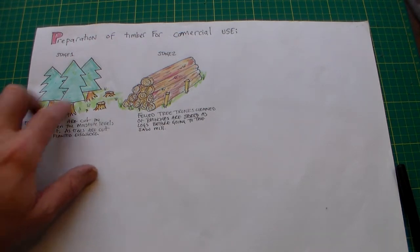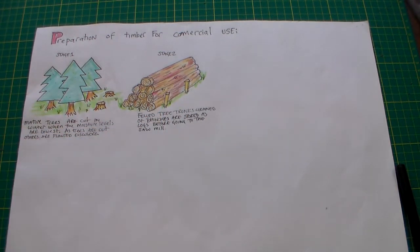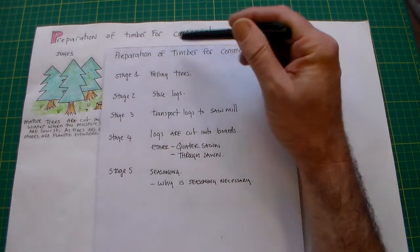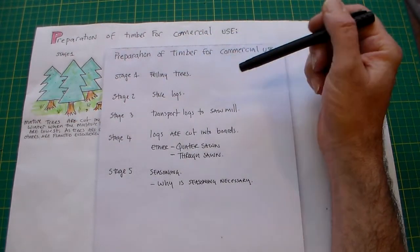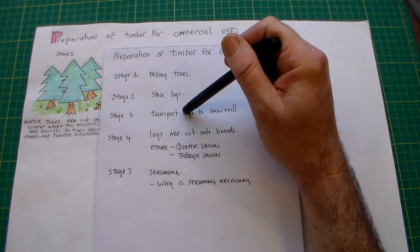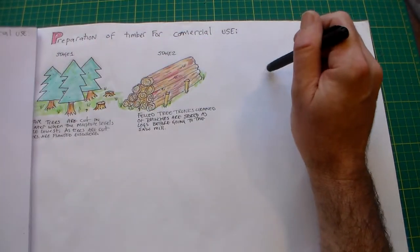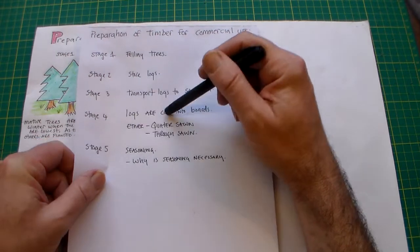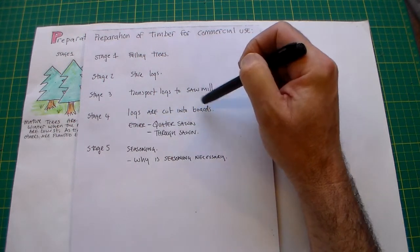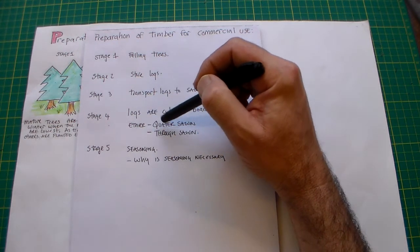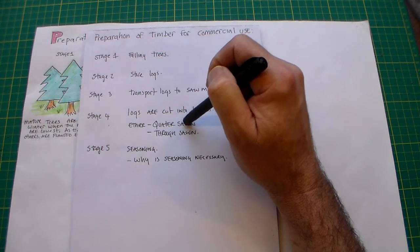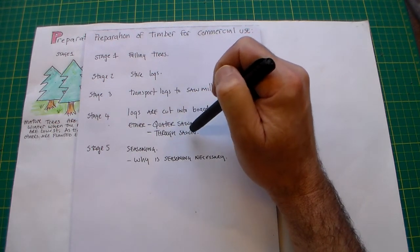I've done these two stages and I'd like you to complete the remaining five stages. Stage three is transporting logs to the sawmill. Stage four is logs are cut into boards — and here I'd like you to explain how logs are cut into boards, which can be either quarter sawn or through sawn. I'd like you to include an image and a note explaining the differences between quarter sawn and through sawn.